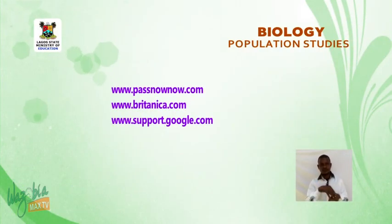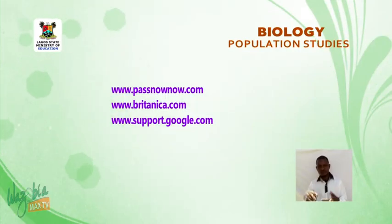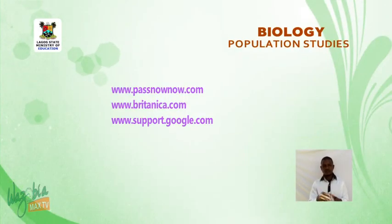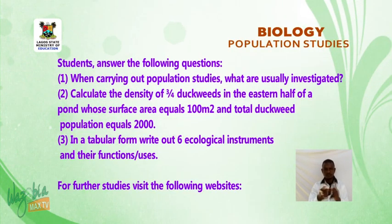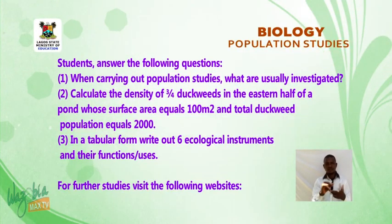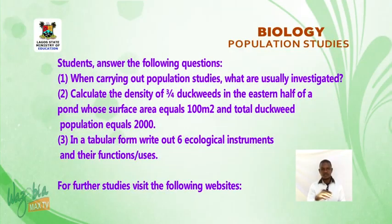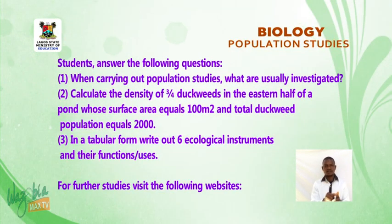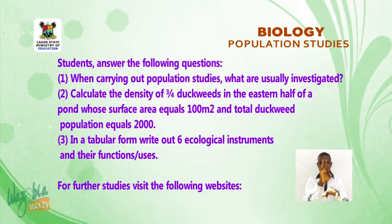In summary, we learned: the definition of population, population characteristics, factors affecting population, population study methods, ecological factors, and instruments for measuring ecological factors. Students, answer the following questions: (1) When carrying out population studies, what are usually investigated? (2) Calculate the density of three-quarter duckweeds in the eastern half of a pond with total surface area = 100 m² and total duckweed population = 2,000. (3) In tabular form, write out six ecological instruments and their functions or uses.